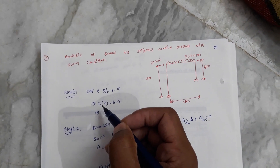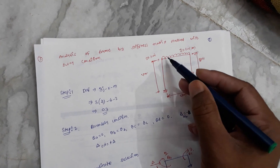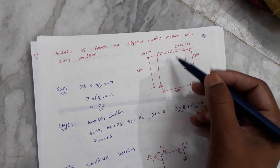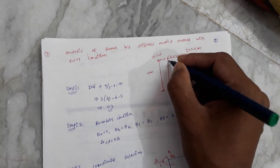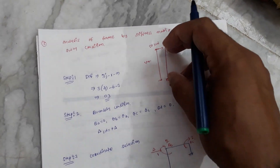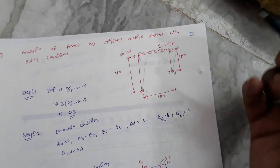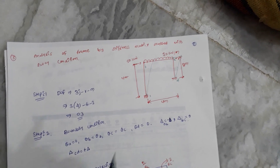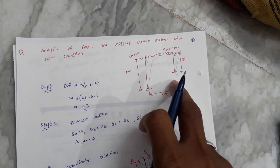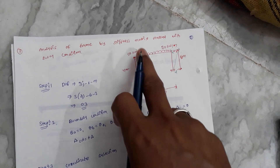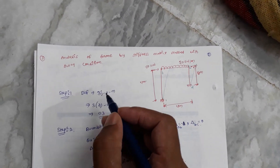Today we will discuss analysis of frames by the stiffness matrix method in sway condition. Here we have three members. Due to the 50 kilo Newton lateral load, members A-to-B and C-to-D are displaced. Sway occurs due to unsymmetry in the geometry of structures and due to unsymmetrical loading conditions.